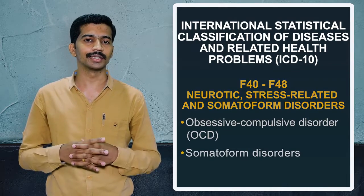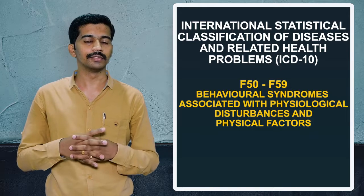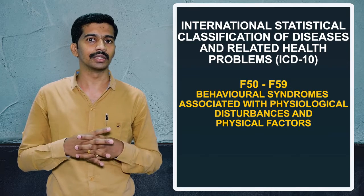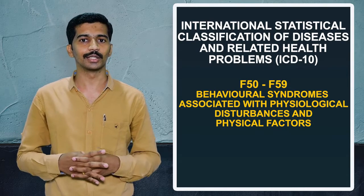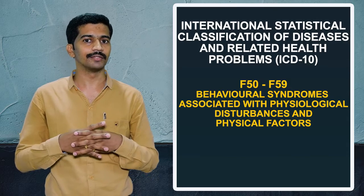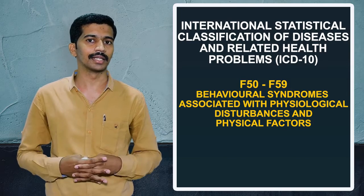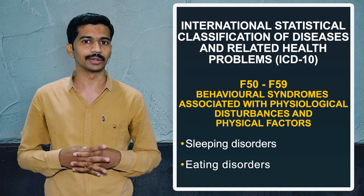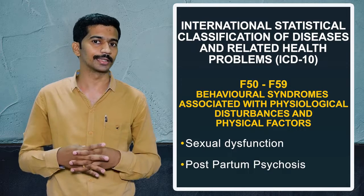The next chapter, F50 to F59, includes behavioral disorders related to physiological and physical problems. Examples include sleeping disorders, eating disorders, sexual dysfunction, and so on.